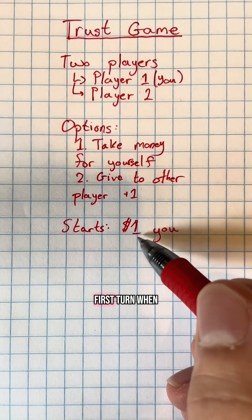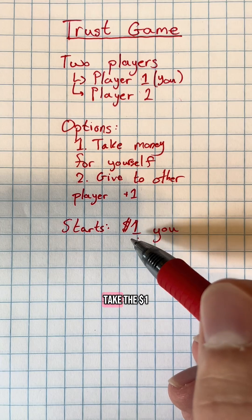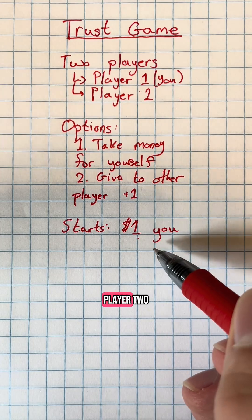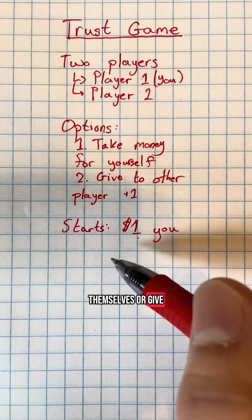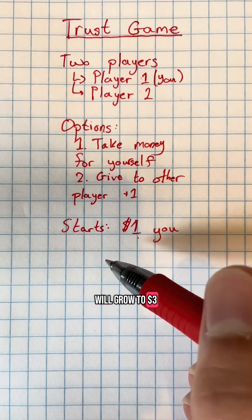So on your first turn, when you have the money, you could either take the one dollar for yourself, or you could give it to player two, and the pot will grow to two dollars. Then player two could either take the two dollars for themselves, or give it back to you, and the pot will grow to three dollars.